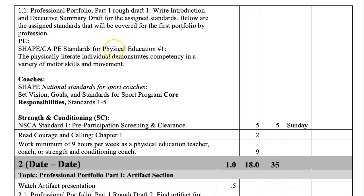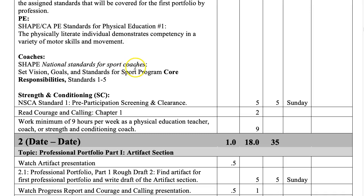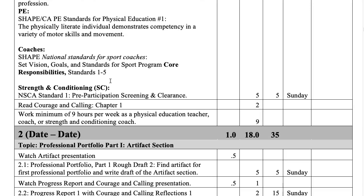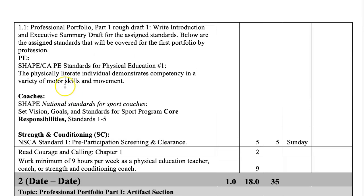If you're a PE teacher, you're going to cover standard number one: the physically literate individual demonstrates competency in a variety of motor skills and movement. If you're a coach, you're going to cover the vision, goals, and standards for sport — core sport program responsibilities, standards one through five. If you're a strength and conditioning coach, you're going to do NSCA standard one: pre-participation screening and clearance.